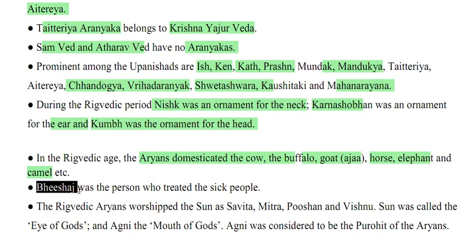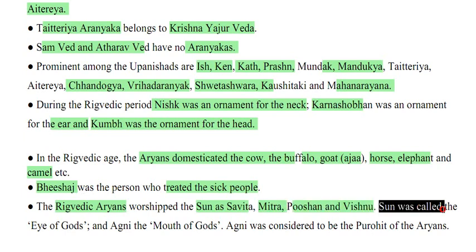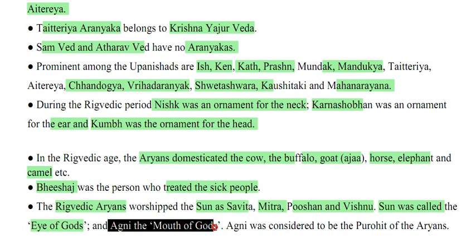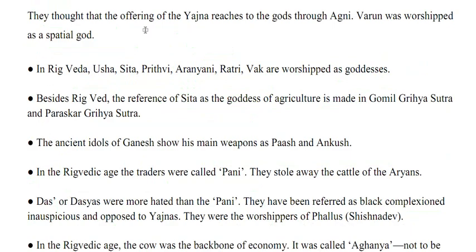Bhishas was the person who treated the sick people. The Rigvedic Aryans worshipped the sun as Savita, Mitra, Pushan and Vishnu. Sun was called the eyes of gods, and Agni was called the mouth of gods. Agni was considered the Purohita of Aryans — they believed offerings of Yajna reached the gods through Agni.